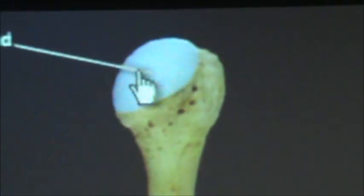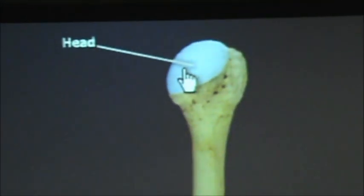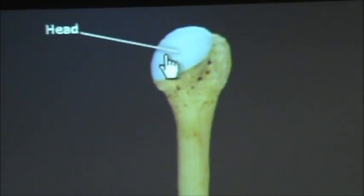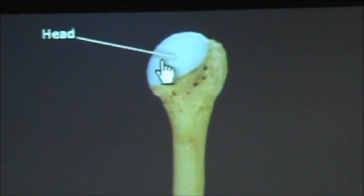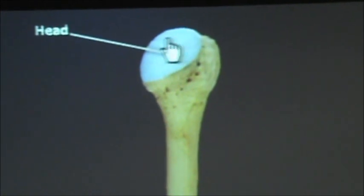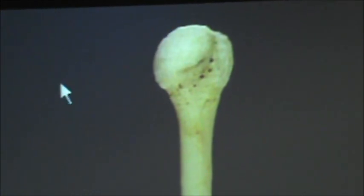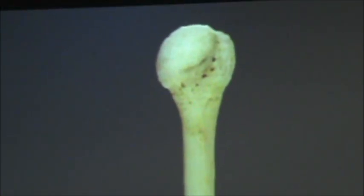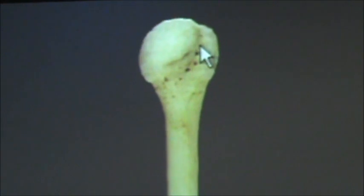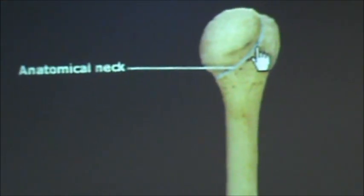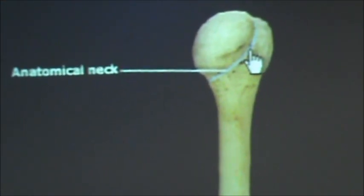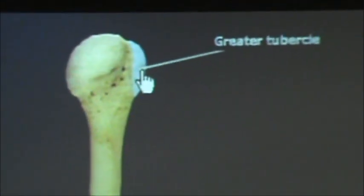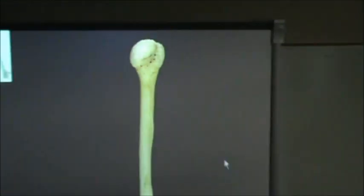Zooming in up here, you can see the head of the humerus. The head is actually on the medial side, and that's going to become important when we talk about the epicondyles below that. Next to the head we have the anatomical neck, and then we have the greater tubercle, which is on the lateral side of the humerus.